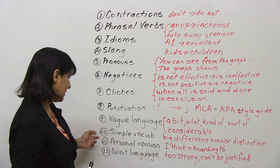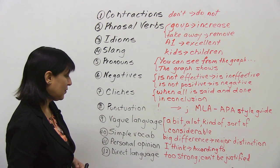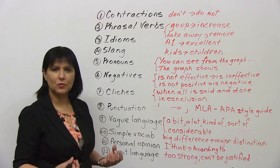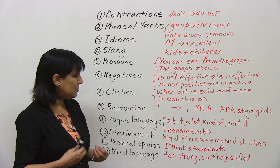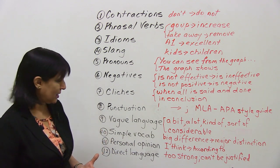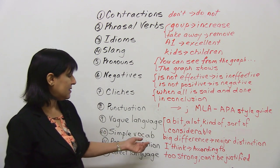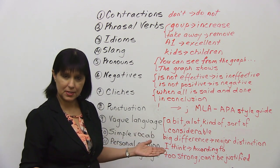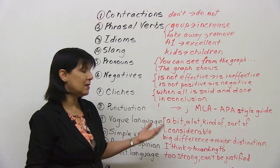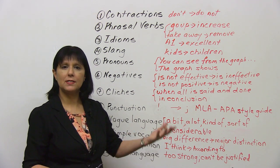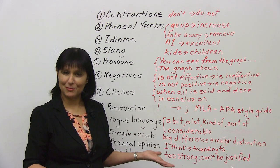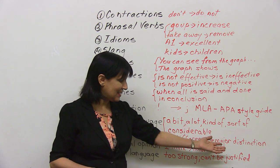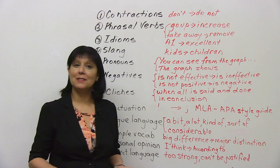Next, avoid simple vocabulary — you want to use slightly more sophisticated vocabulary. Instead of saying 'a big difference,' say 'a major distinction.' That is academic English.